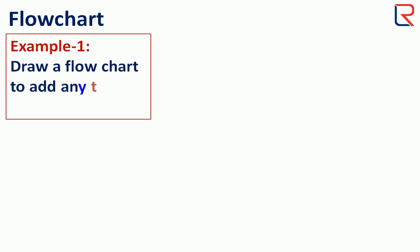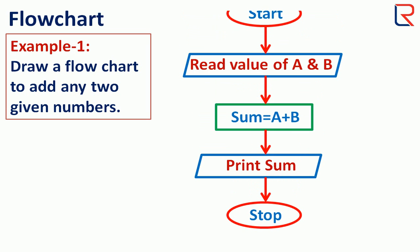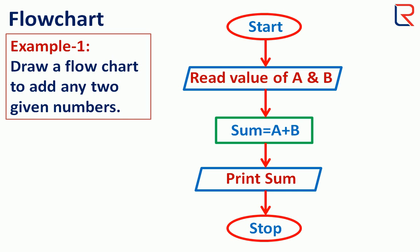Let's have an example. Draw a flowchart to add any two given numbers. We start and end flowchart with terminal symbols always. Other symbols depend on the question requirement. In this question, firstly we need to take two numbers to perform addition, so we use input symbol to read the value: read the value for A and B, that is for number one and number two.